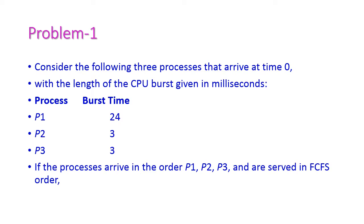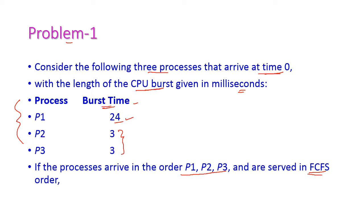Problem 1. Consider the following 3 processes that arrive at time 0, with length of CPU burst given in milliseconds. We are having 3 processes and burst time of first process P1 is 24, and burst time of P2 and P3 are 3. If the processes arrive in the order P1, P2, P3 and are served in first come first serve order.